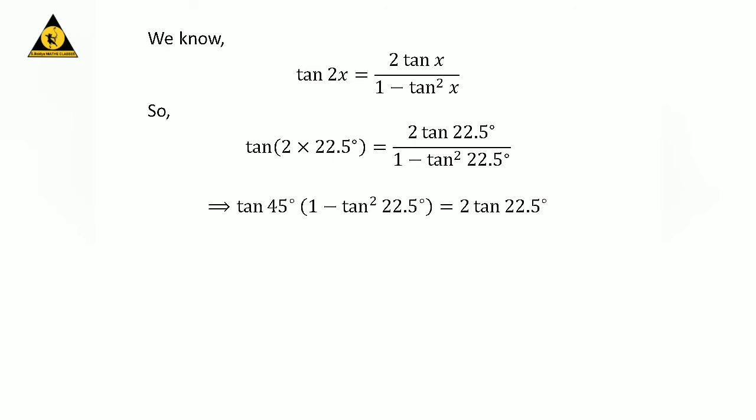We know 2 times 22.5 degrees is equal to 45 degrees. Shifting 1 minus square of tangent of 22.5 degrees from the denominator of the right hand side to the left hand side gives us: tangent of 45 degrees times 1 minus square of tangent of 22.5 degrees is equal to 2 times tangent of 22.5 degrees. Since tangent of 45 degrees is equal to 1, we get 1 minus square of tangent of 22.5 degrees is equal to 2 times tangent of 22.5 degrees.